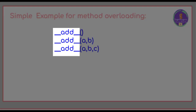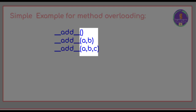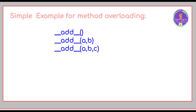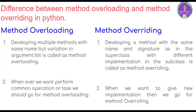Here the name of the method — the 'add' method — is the same but there is variation in the argument list. Next is method overriding: developing a method with the same name and signature as in the superclass, but with a different implementation in the subclass, is called method overriding.